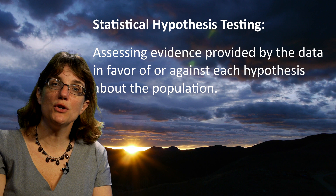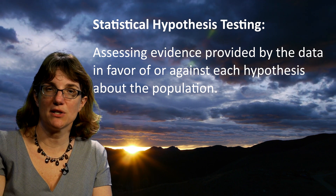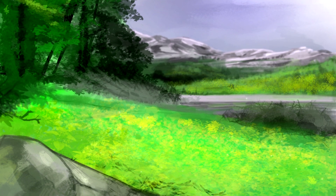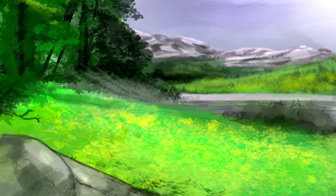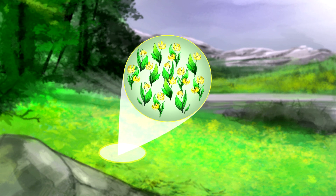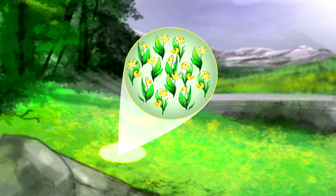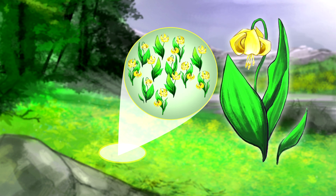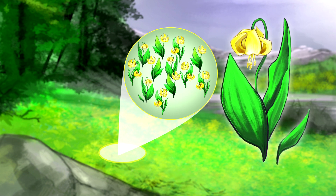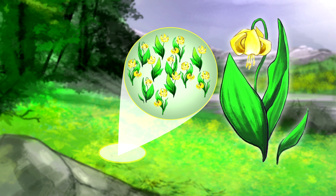In order to really understand how inference works, we first need to talk about probability, because it's the underlying foundation of all statistical methods. Here's the basic idea. As you know, statistics uses a sample to learn about the larger population from which the sample has been drawn. Ideally, the sample should be random, so that it might better represent the entire population.